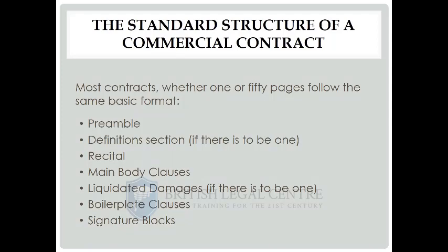After that we come to the housekeeping clauses - the boilerplate clauses. They're used in every type of contract; there are about 60 of them, but they're not suitable for every type. Some should only be used in commercial lease agreements, like a hell or high water clause, or in oil and gas leases, like a Mother Hubbard clause. But others - the governing law clause, the force majeure clause, the severability clause, the entire agreement clause - are used in every contract. Don't cut and paste them, but use them as precedents and tailor them for your individual contracts. Finally, after you've written everything agreed on, you sign the document in the signature blocks.